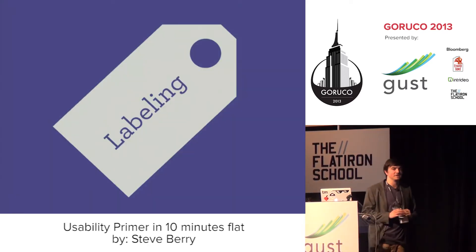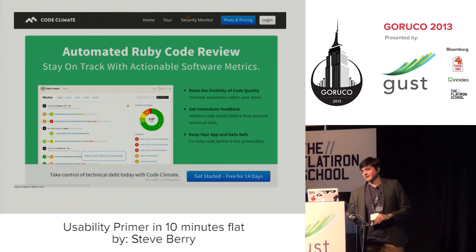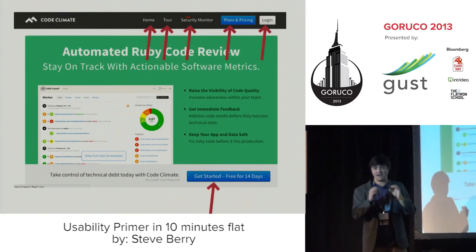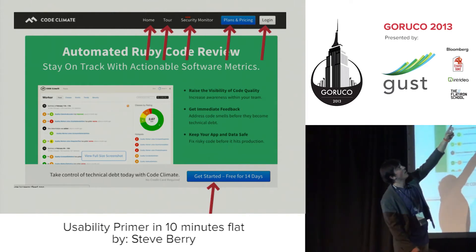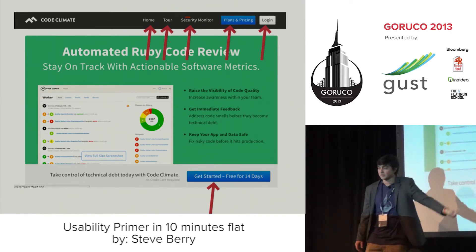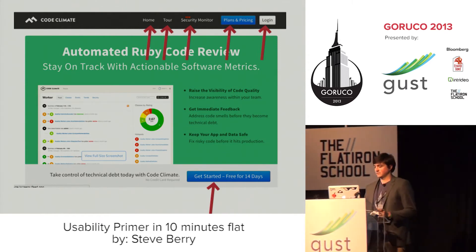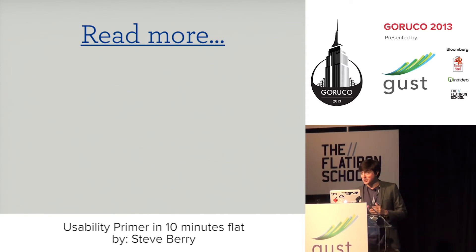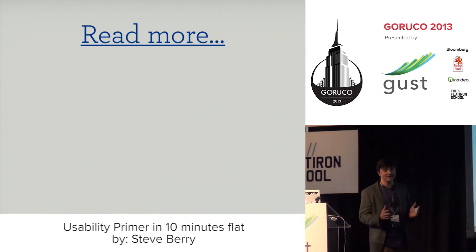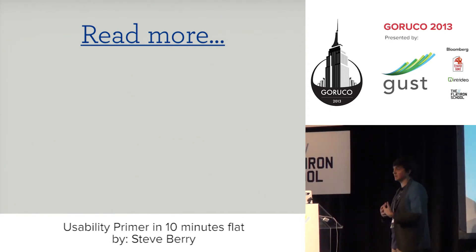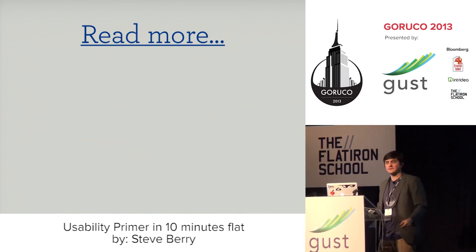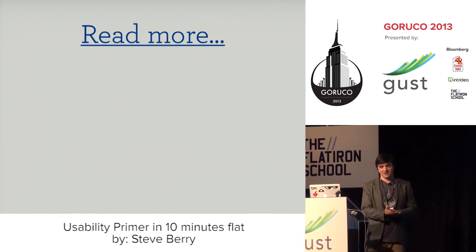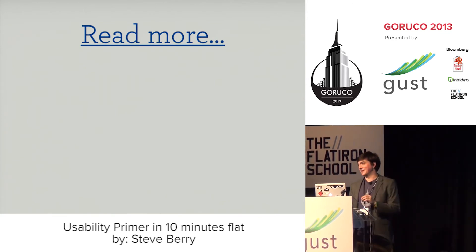Another big topic is labeling — essentially what information architects call the content of links. Home, tour, security monitor, plans and pricing, get started, free for 14 days — those are labels. The one I hate the most is 'read more.' I have no idea what 'more' is without context. I don't know what I'm clicking on. If anybody ever says 'just throw read more on there,' that's a smell — you can find a better label for that.